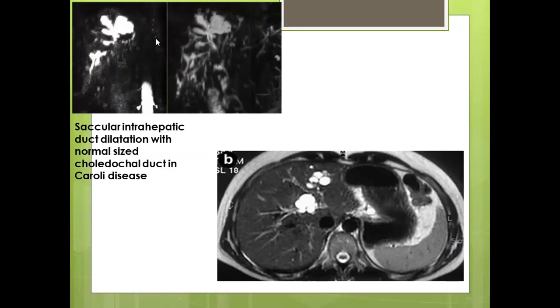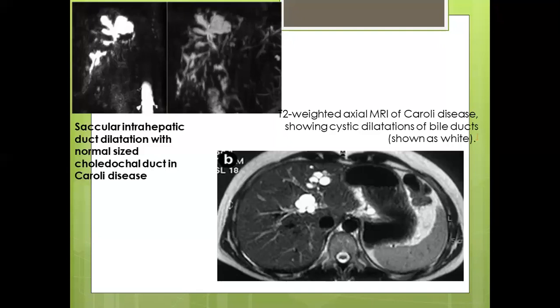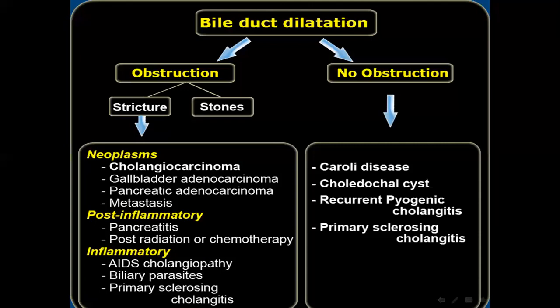On T2-weighted axial MRI, Caroli disease shows cystic dilatation of the bile ducts. For differential diagnosis, it is important to differentiate obstructive from non-obstructive causes. Obstructive causes of intrahepatic biliary dilatation include neoplasms (cholangiocarcinoma, gallbladder adenocarcinoma, pancreatic adenocarcinoma, metastasis), post-inflammatory pancreatitis, post-radiation or chemotherapy, inflammatory causes (AIDS cholangiopathy, biliary parasites, primary sclerosing cholangitis). Non-obstructive causes include Caroli disease, choledochal cysts, recurrent pyogenic cholangitis, and primary sclerosing cholangitis.